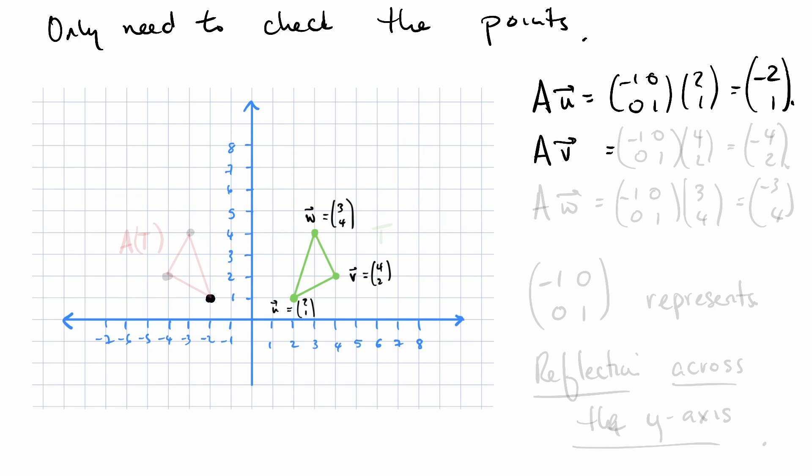AV is equal to negative 1, 0, 0, 1 times 4, 2, which is negative 4, 2. That's right here. And AW is negative 1, 0, 0, 1, 3, 4, which is negative 3, 4. That is right here.